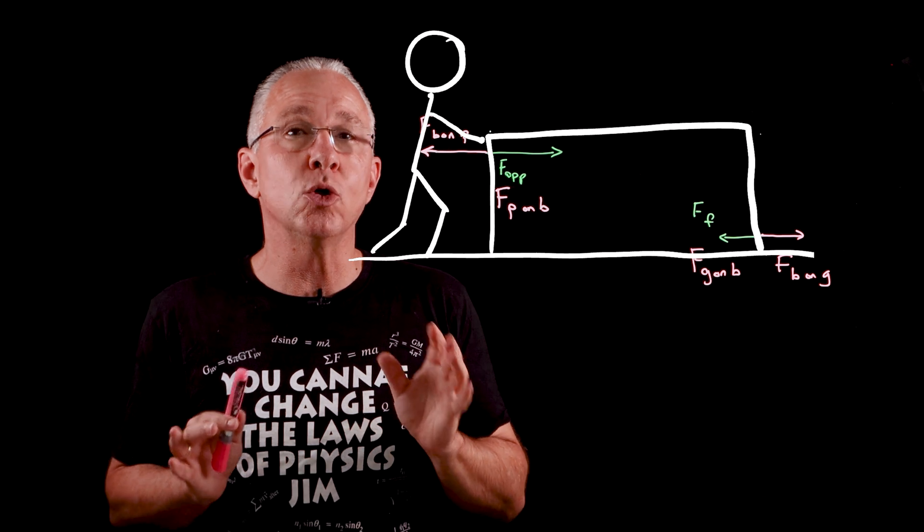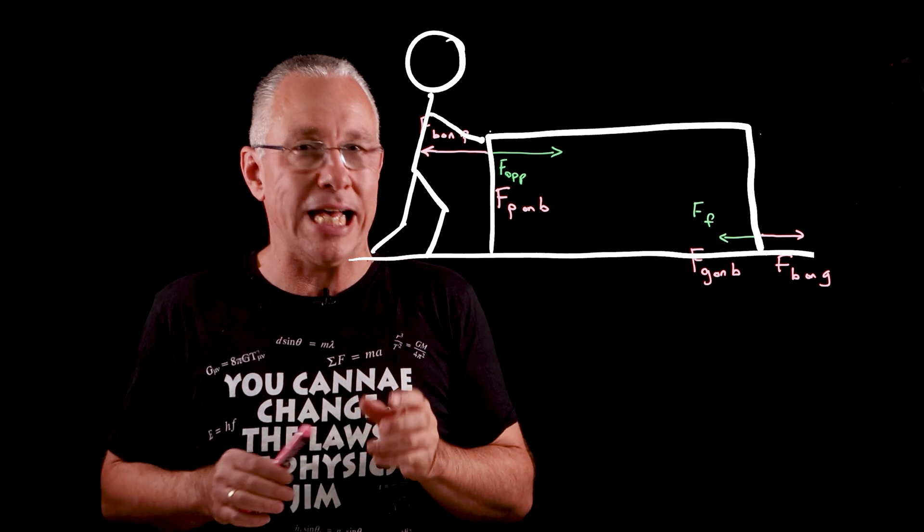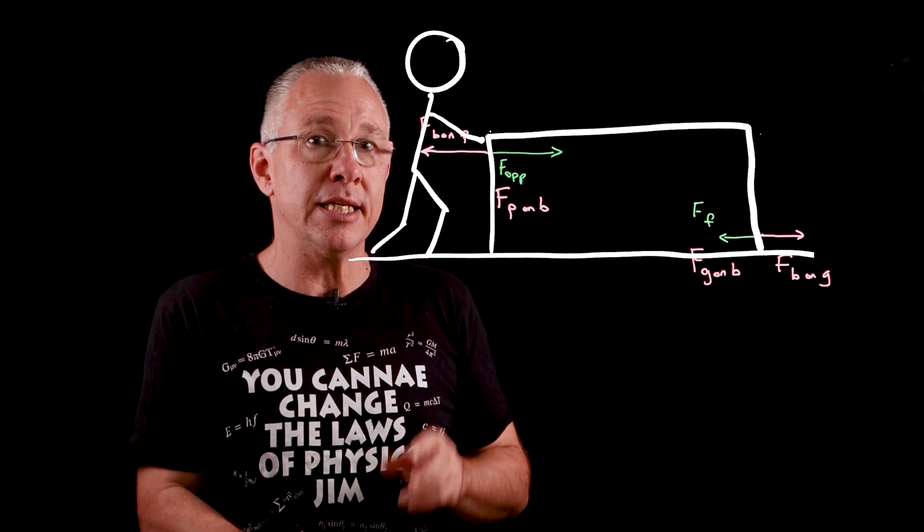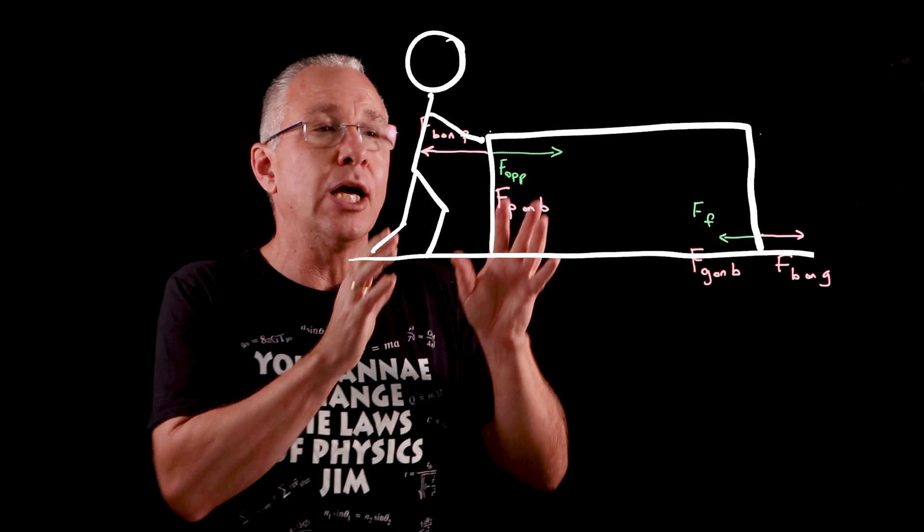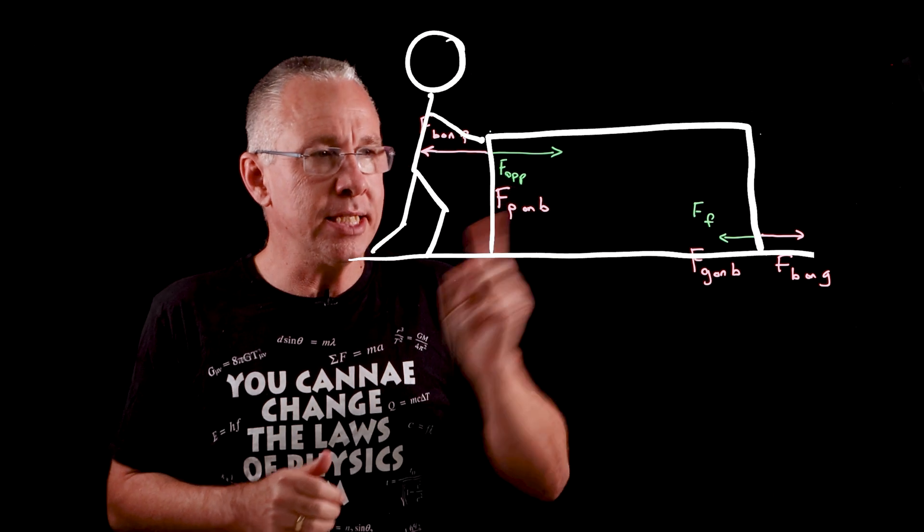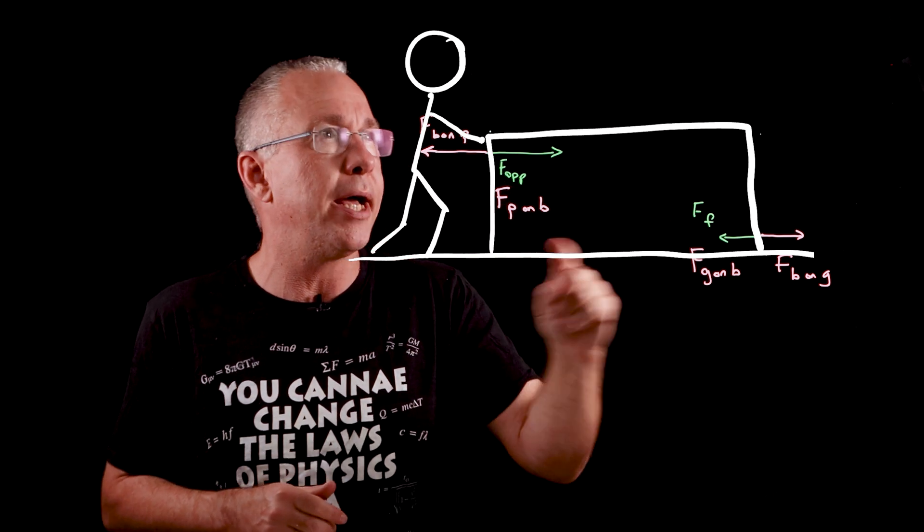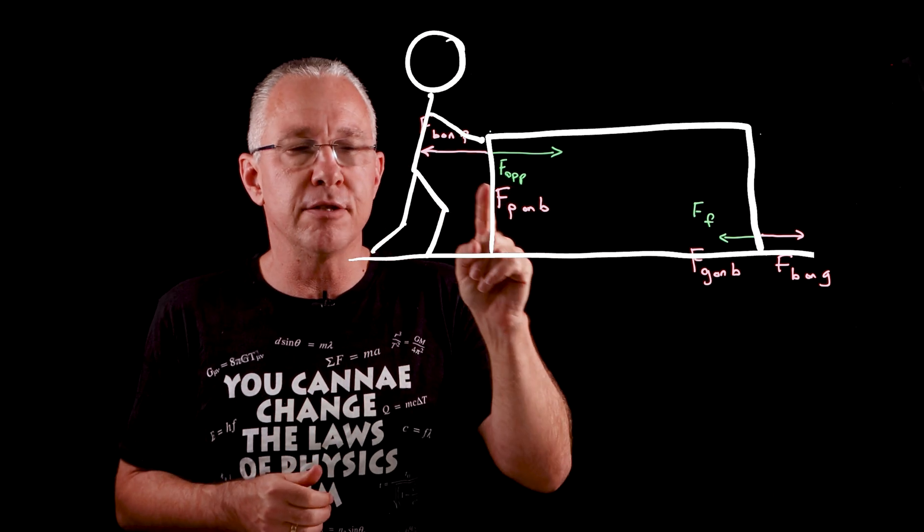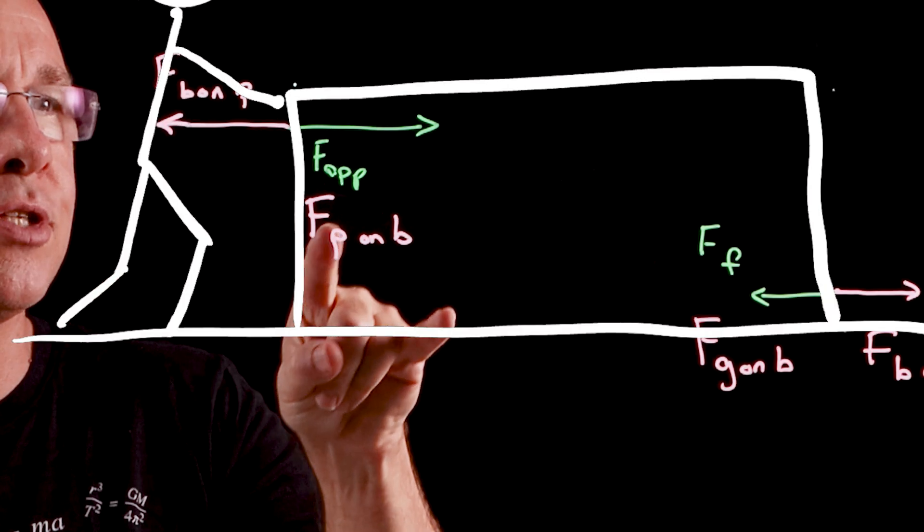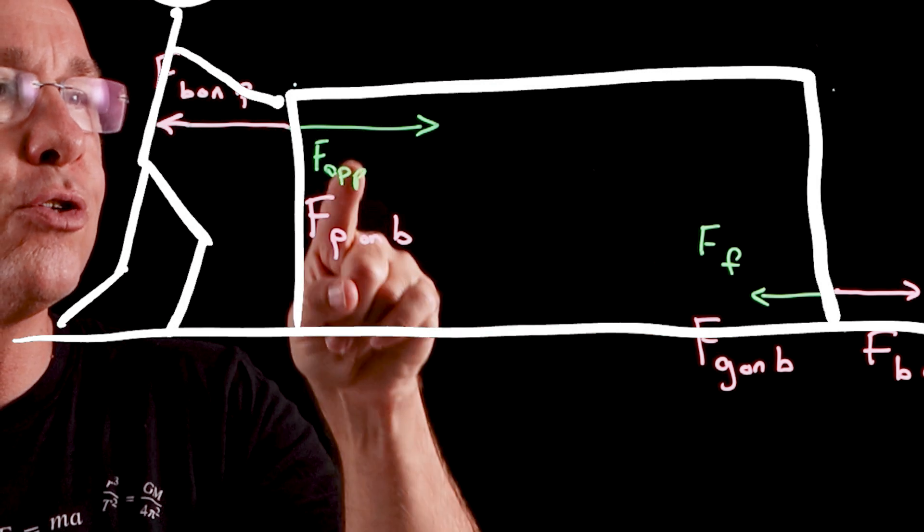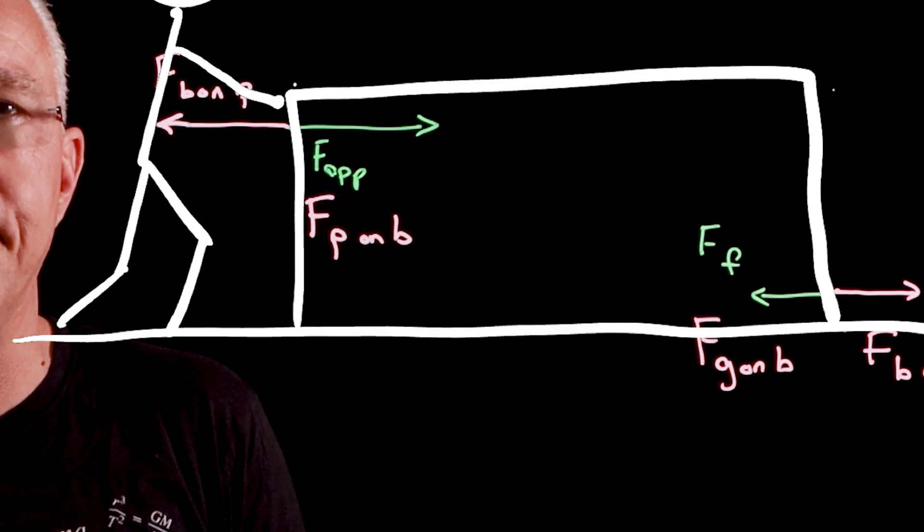But now what we want to do is look at Newton's second law and first law and it differs in that now we are only interested in the forces acting on the box. So in this case I have two forces applying on the box. There's the force of the person on the box and the force of the ground on the box and you will notice that in our case those two forces are not the same magnitude.